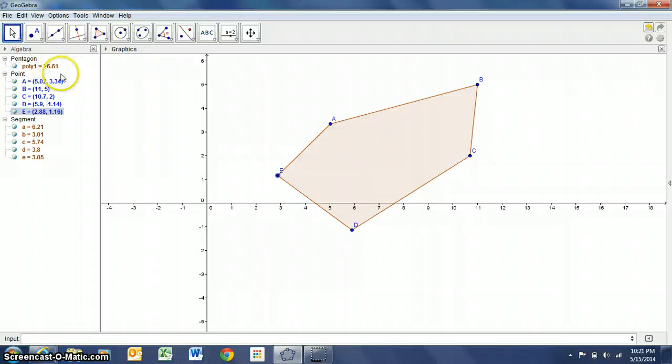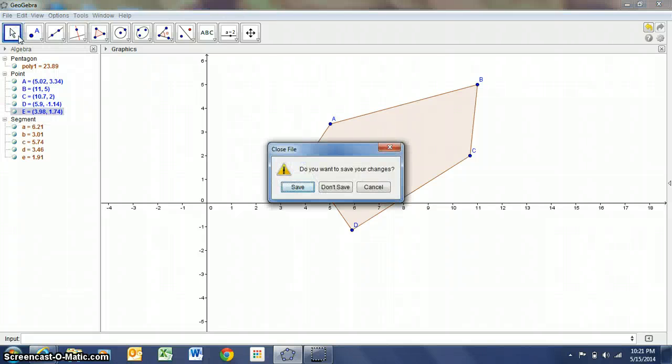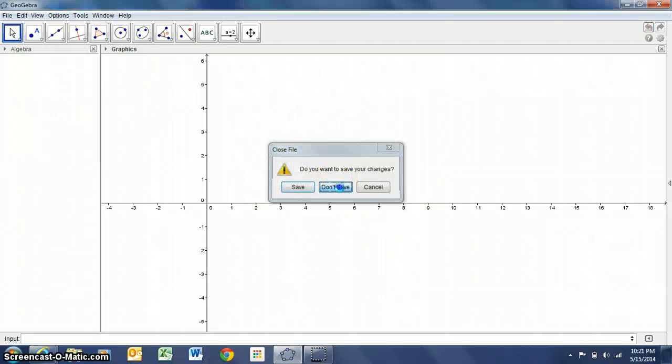So now I have 26.61 square units and as I move this point around you notice that number goes down a little bit and so on. So you can talk to students about the effect of changing points on the area of your polygon. Another neat application of this, and again this would be something that in a traditional math class would take a lot of time, but I can do it really quickly with GeoGebra.